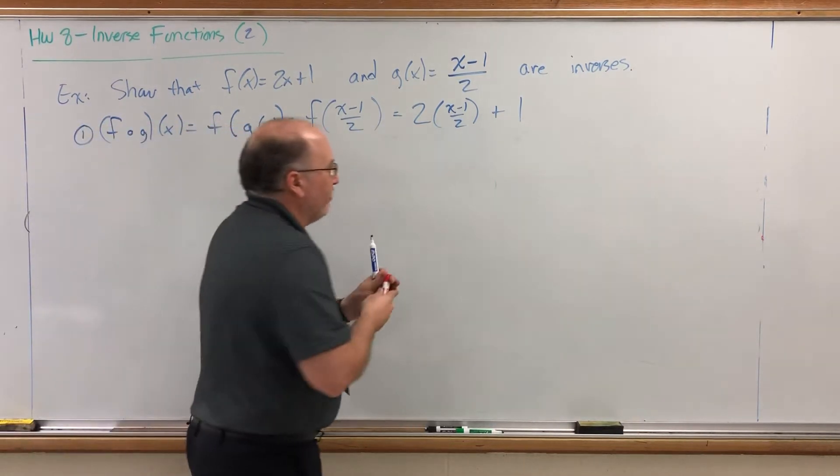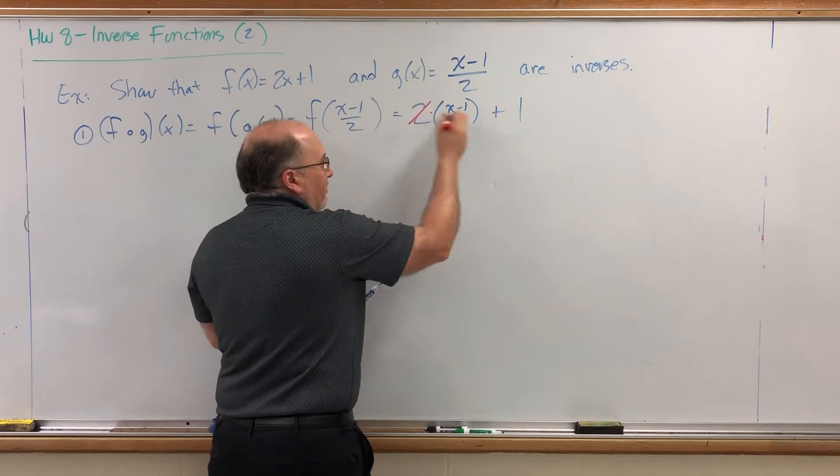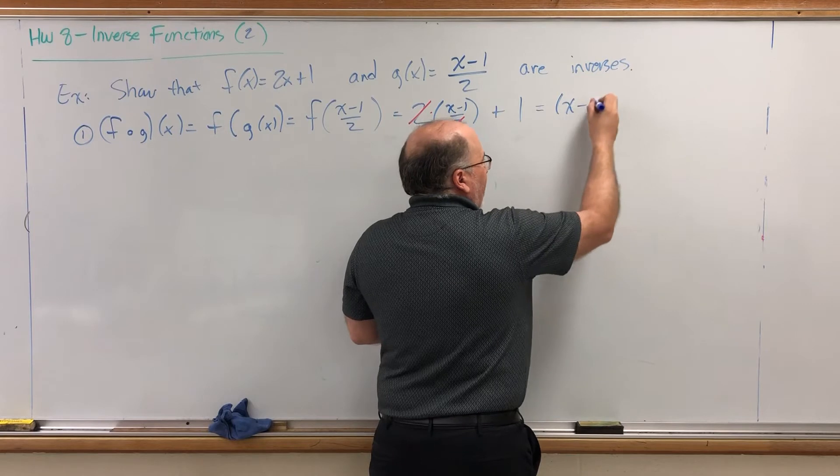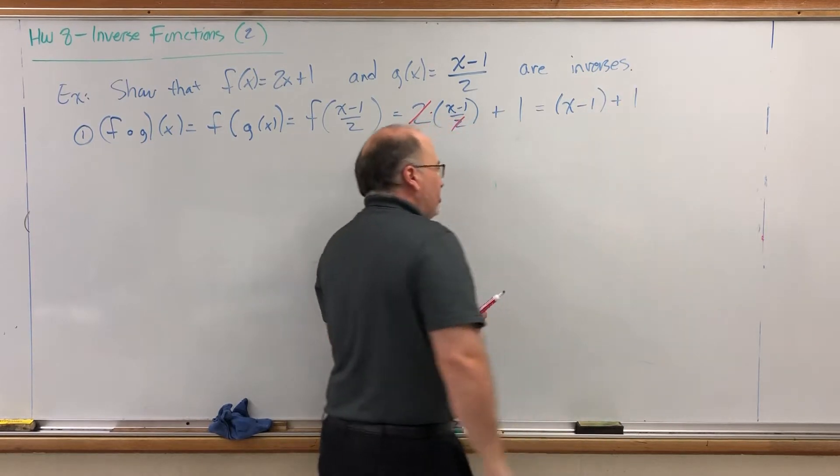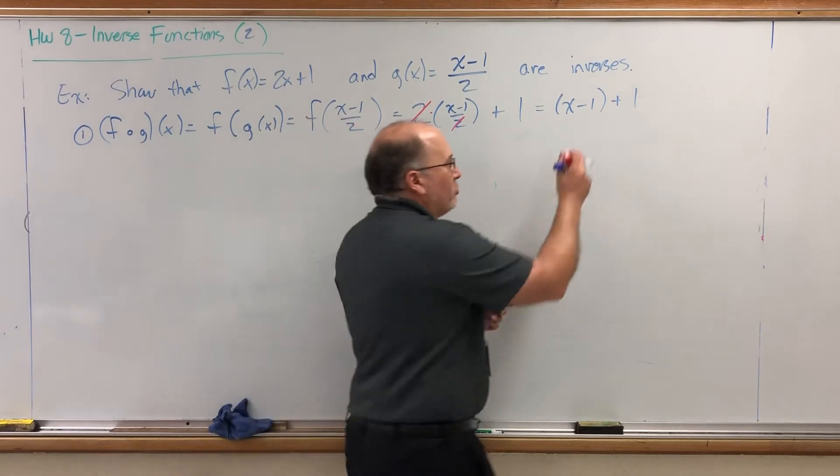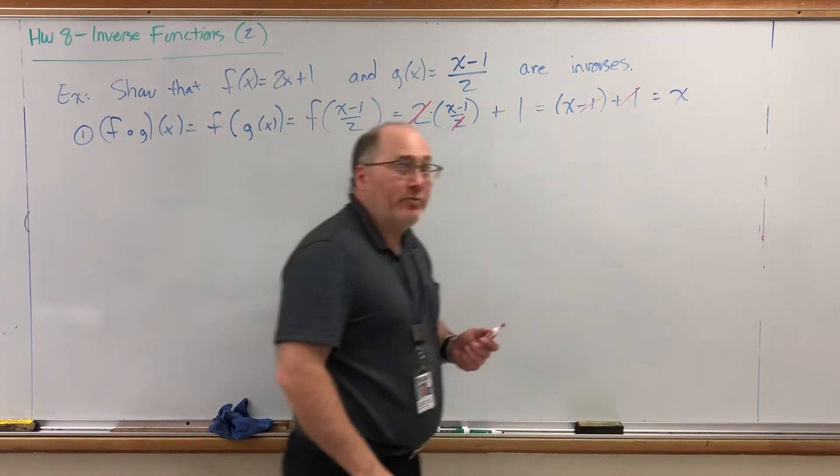Now it looks like a mess, but it's going to clean up real nice. Because look at this multiplication problem. We have times 2 and divided by 2. Those cancel. That leaves in parentheses x minus 1. And I no longer really need those parentheses because there's nothing outside to keep them there. So the plus 1 and the minus 1 do cancel. And look at that. I'm back where I started. I'm left with an x.